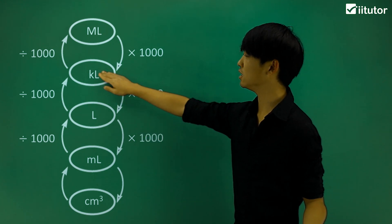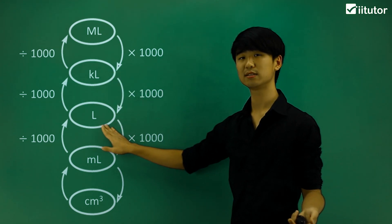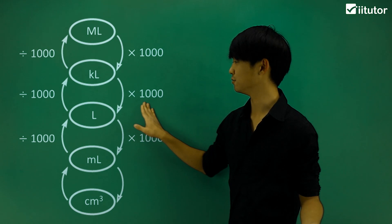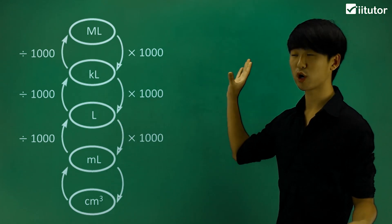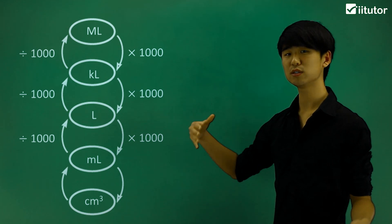So for example, if I want to go from kiloliters down to liters, I'm just going to multiply that number by 1,000. It'll be 1,000 liters. So that's the basis of the conversions that we're going to be looking at now. We'll try and answer some questions.